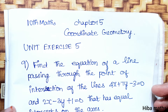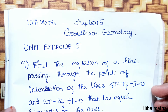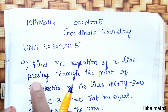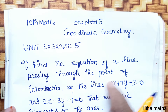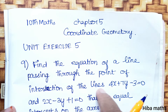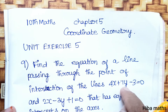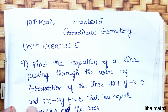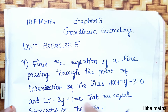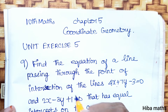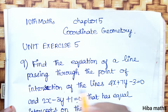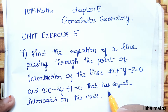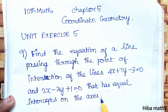Hello students, welcome to Hibamax 10 Standard Max Chapter 5 Coordinate Geometry Unit exercise 5, 9th question. Find the equation of a line passing through the point of intersection of the lines 4x + 7y - 3 = 0 and 2x - 3y + 1 = 0, and the line has equal intercepts on the axis.